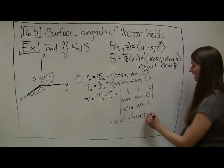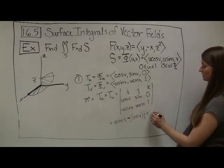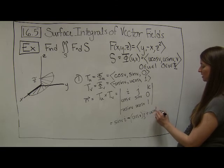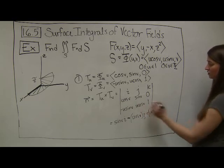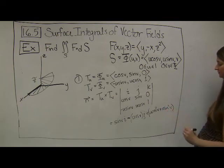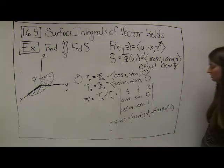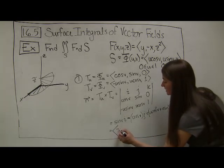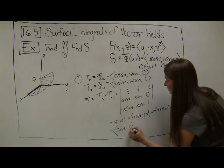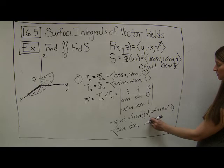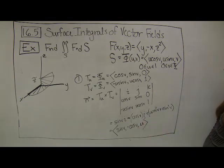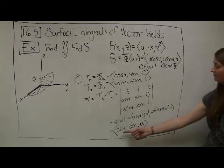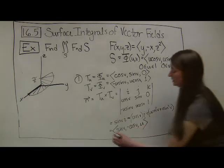And then finally for my k component, I get cos v times u cos v, which is u cos² v, minus a negative u sin² v. What does this simplify into? It becomes <sin v, -cos v>, and I can factor out this u and get just cos² v + sin² v, which is 1. So I just get u in the final component. Now that I've found my normal vector, that was step 1. This is my normal vector.